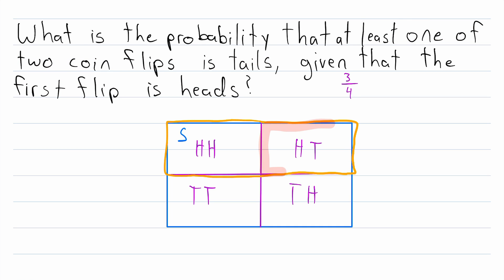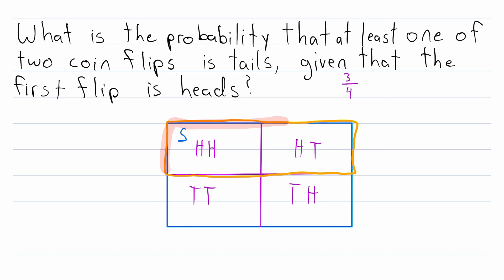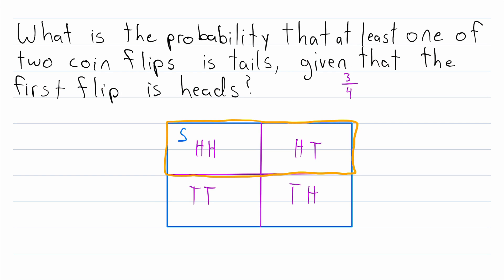Heads-tails is the only event where the first flip is heads and we have at least one tails. Before we restricted the sample space, this had a probability of one-fourth. But now our sample space has been reduced because of the given condition, and relative to the new restricted sample space, this outcome takes up one-half of the total probability. So it seems reasonable that the conditional probability of flipping at least one tails given that the first flip is heads is one-half.